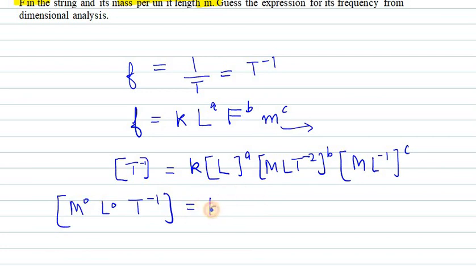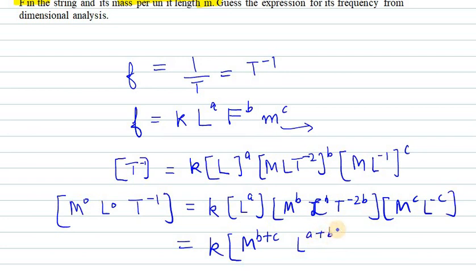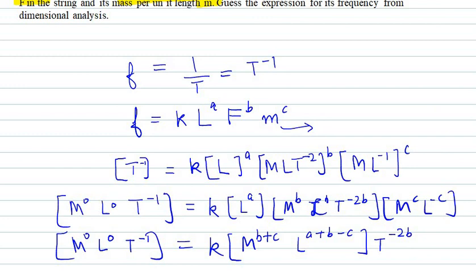On the right-hand side we have L raised to power A, then M raised to power B, L raised to power B, T raised to power minus 2B, then M raised to power C and L raised to power minus C. Equating all the same terms: M has exponent B plus C, L has exponent A plus B minus C, and T has exponent minus 2B. So M is raised to power 0, L is raised to power 0, and T is raised to power minus 1.